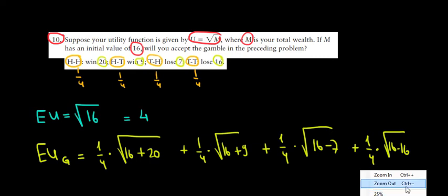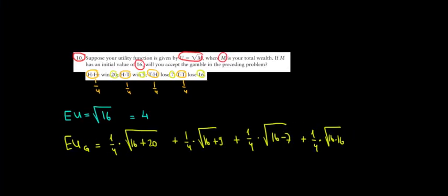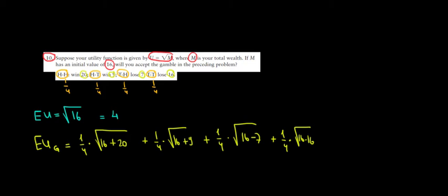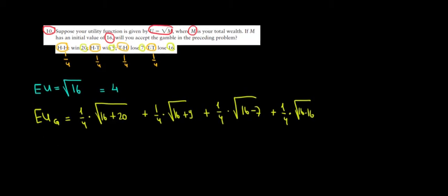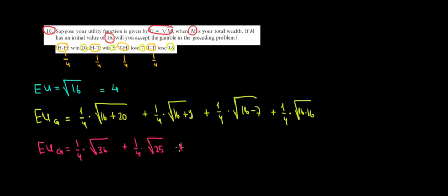Let me zoom out to get some more space and do the math. The expected utility of this gamble would be: 1/4 times √36, plus 1/4 times √25, plus 1/4 times √9, plus 1/4 times √0. Note: 16 + 20 = 36, 16 + 9 = 25, 16 − 7 = 9, and 16 − 16 = 0.